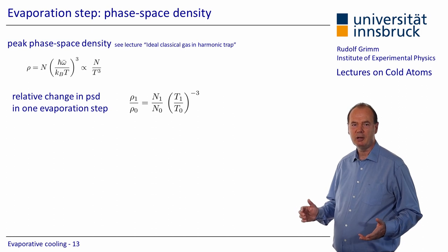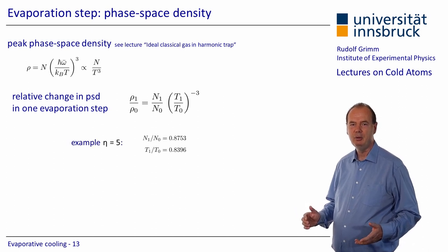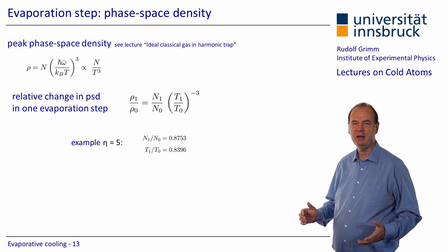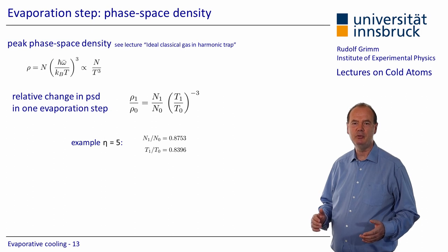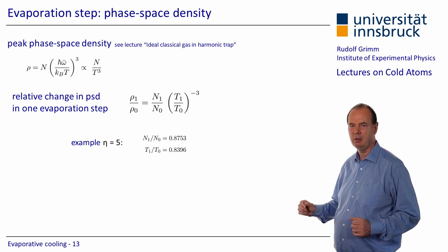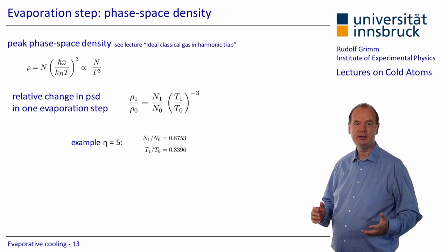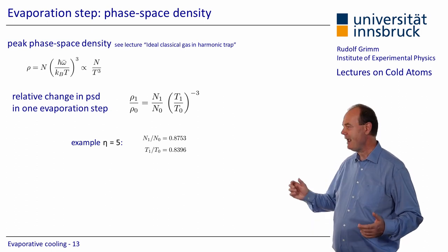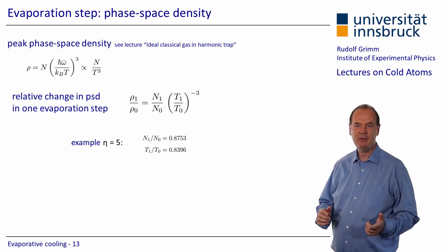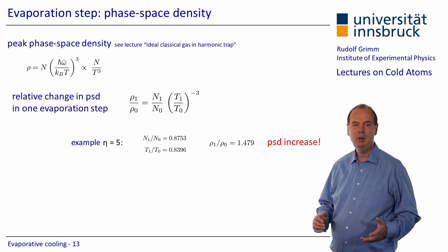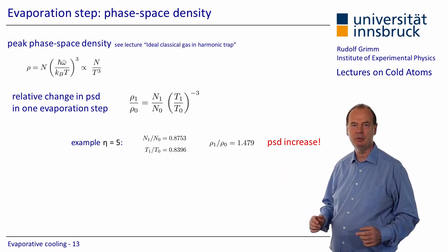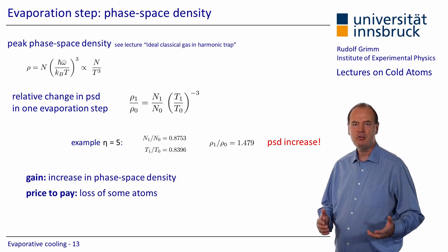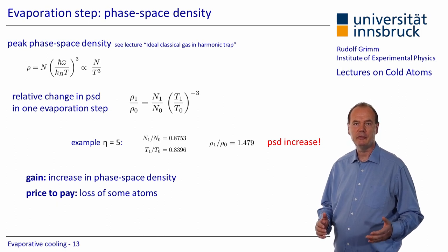Let us consider a numerical example, assuming a value of the truncation parameter of eta equals 5. Our equations tell us that the number of atoms is reduced to about 88% of its initial value, while the temperature goes down to about 84%. For the phase space density, this means an increase by roughly a factor of 1.5, which is quite substantial. Our gain is an increase in phase space density, but the price to pay for it is a loss of atoms.